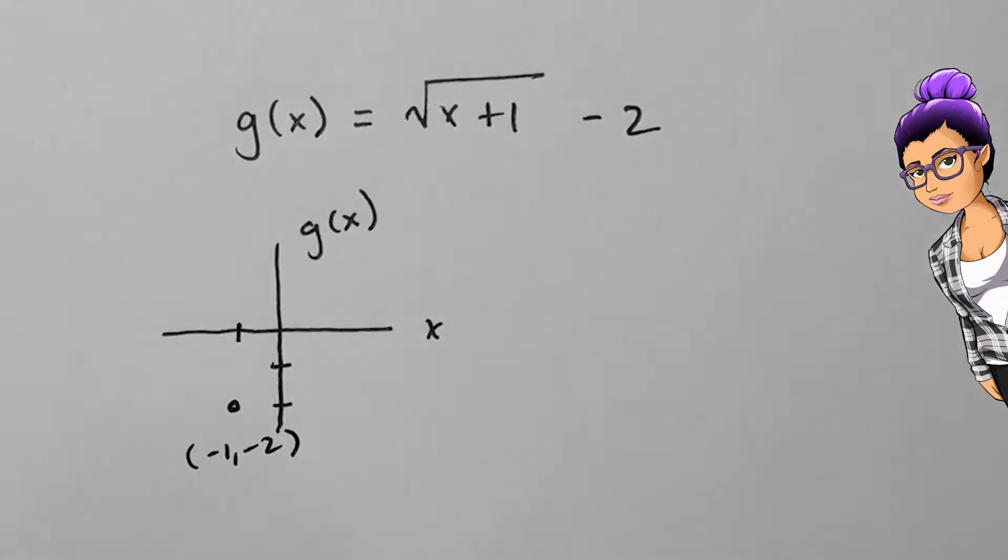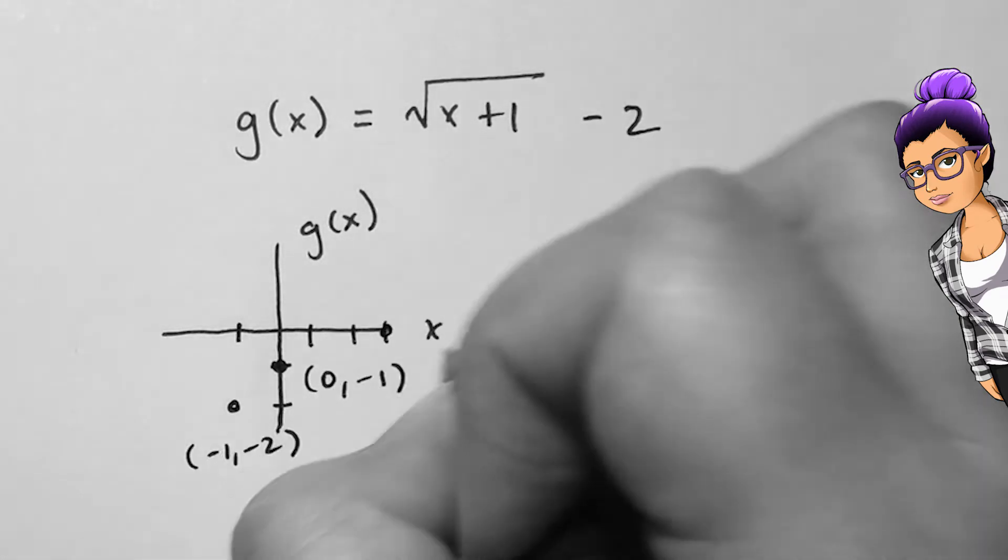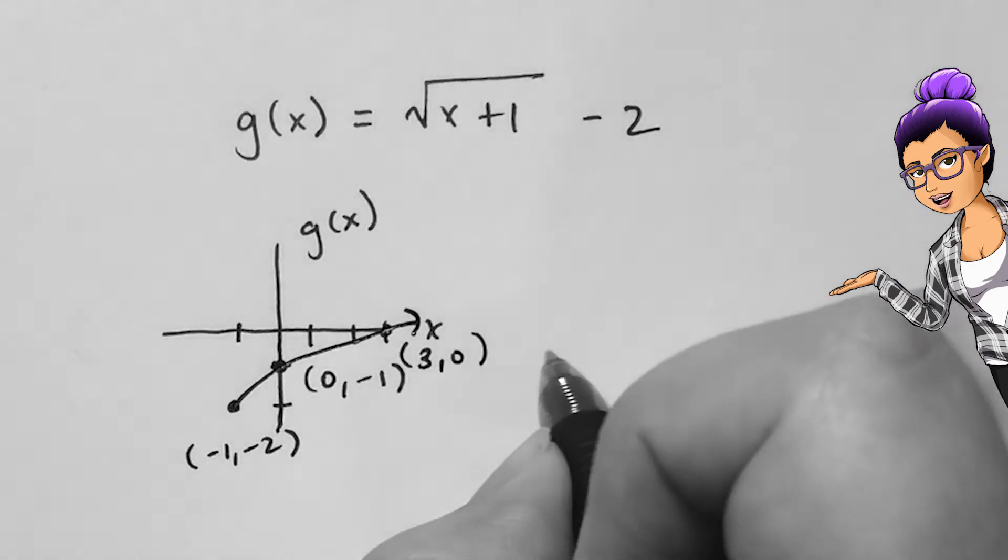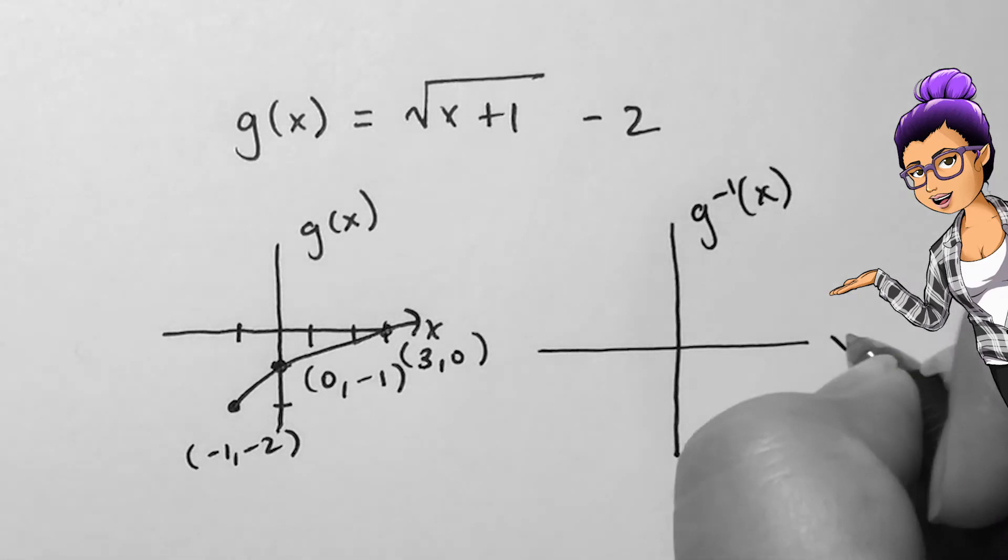Three good points on this graph are (−1, −2), (0, −1), and (3, 0). The inverse of each point is (−2, −1), (−1, 0), and (0, 3).